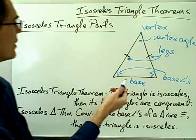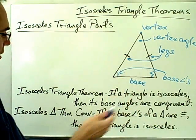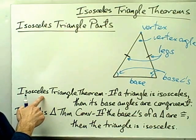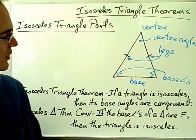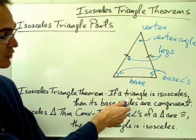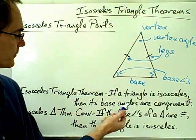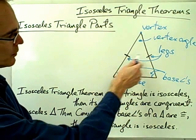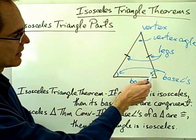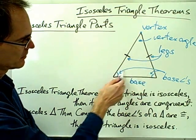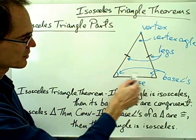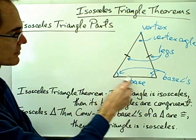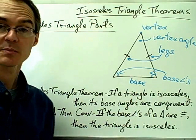So these are the different parts of an isosceles triangle. Now using these parts, we can talk about the isosceles triangle theorem. The isosceles triangle theorem says: if a triangle is isosceles, then its base angles are congruent. The base angles are the angles opposite the legs of the isosceles triangle, so if a triangle is isosceles, these base angles must be congruent.